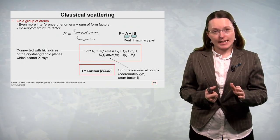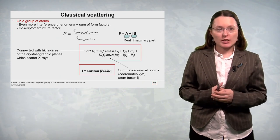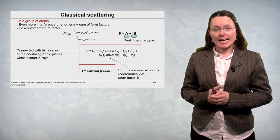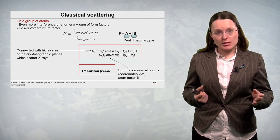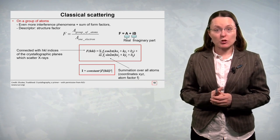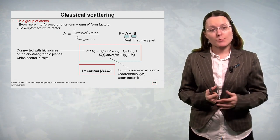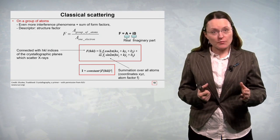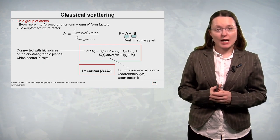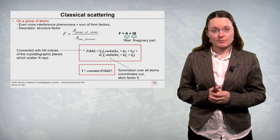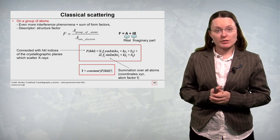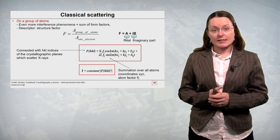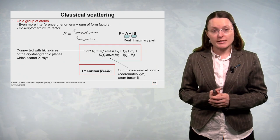So, in this case the structure factor is connected with hkl indices of the crystallographic planes which scatter X-rays. And we have summation over all atoms. So, we have in this equation the atomic coordinates x, y, z and the corresponding atom factors f. Now, the structure factor is directly connected with our X-ray diffraction experiment. It was shown in one of the diffraction theories that the intensity of reflections on the diffraction pattern is directly proportional to the squared module of the structure factor.